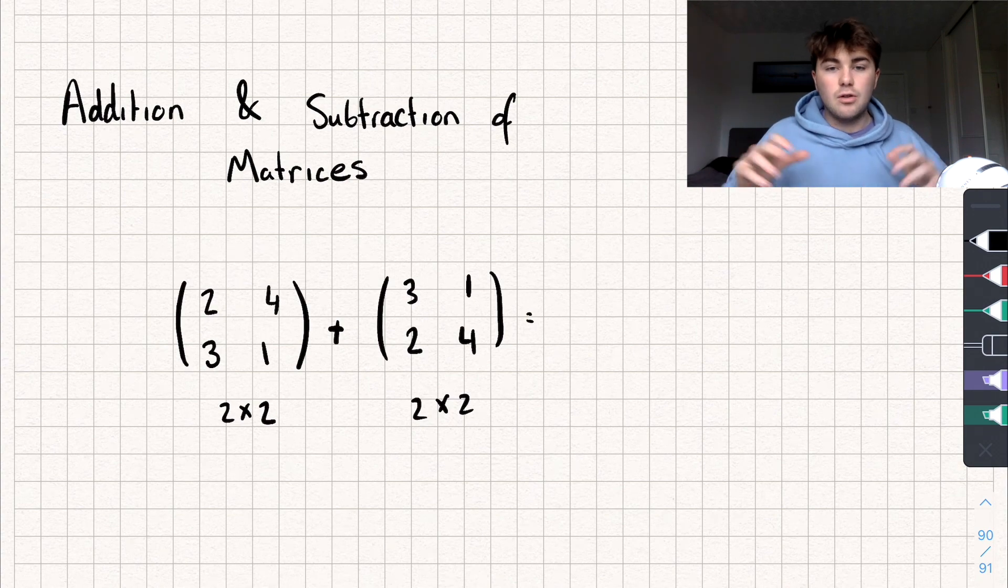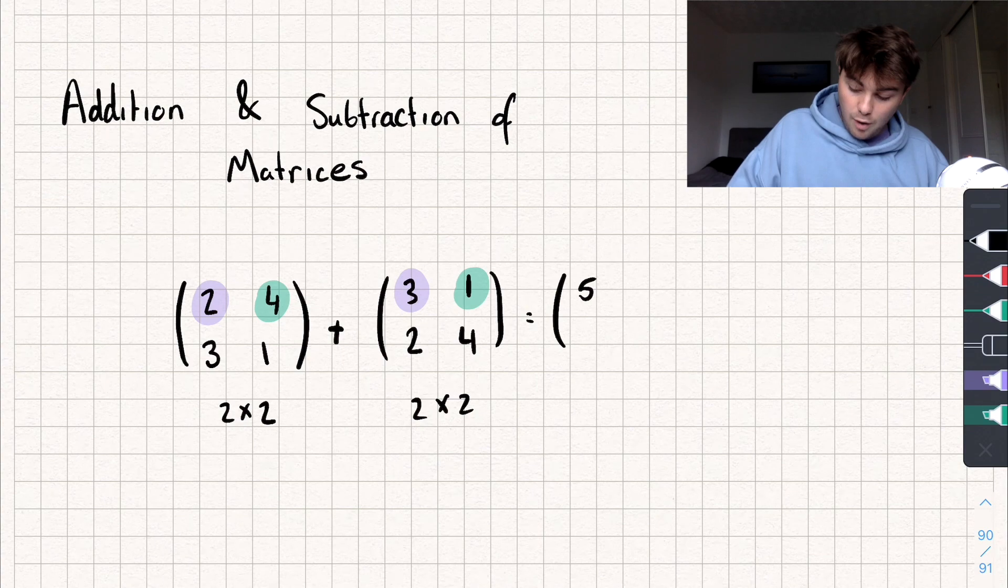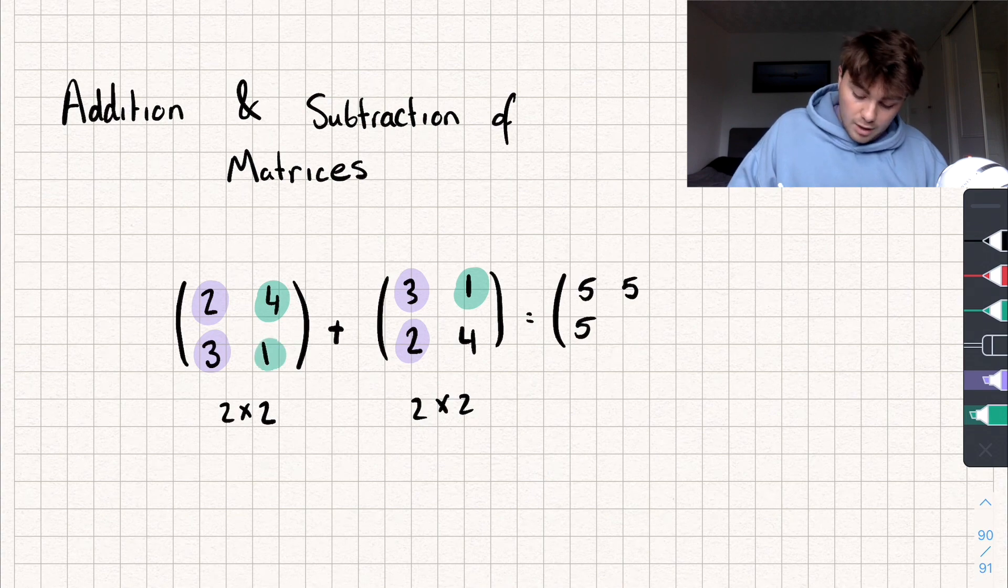Now when we add them we just add the corresponding elements. So for example I'm going to add the top left element to the other top left element. So we get 5, then I'm going to add the top right element to the other top right element. We get 5, bottom left to bottom left we get 5, and bottom right to bottom right and you can see we get 5 again.